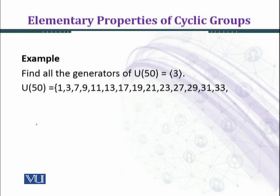U(50) equals: now we are seeing which elements are relatively prime with 50. We start with 1. 1 and 50 are relatively prime. And 2 and 50, we have gcd 2, so we shall not consider 2 here. And we shall consider 3, and gcd of 3 and 50 is again 1 and they are relatively prime.